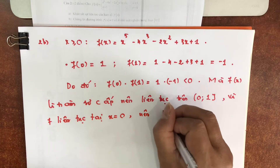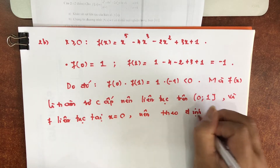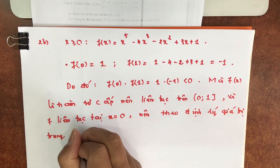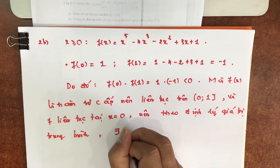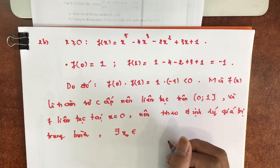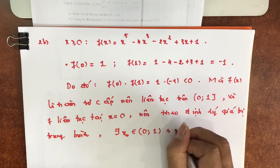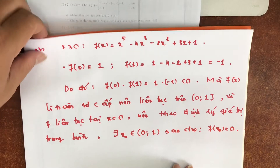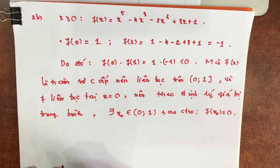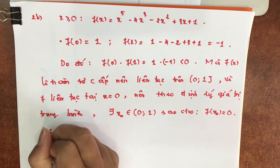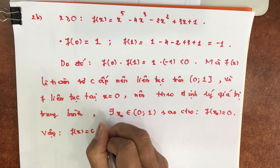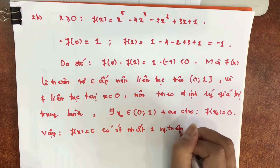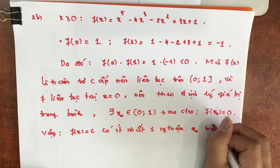Cho nên theo định lý giá trị trung bình, thì tồn tại x₀ thuộc khoảng (0,1) sao cho F(x₀) bằng 0. Như vậy nói cách khác là phương trình F(x) bằng 0 có nghiệm, có ít nhất 1 nghiệm trong đoạn [0,1]. Vậy F(x) = 0 có ít nhất 1 nghiệm x₀ trên đoạn [0,1].